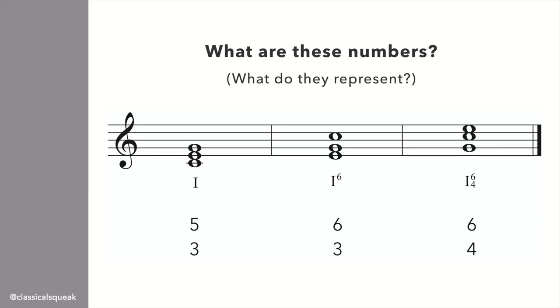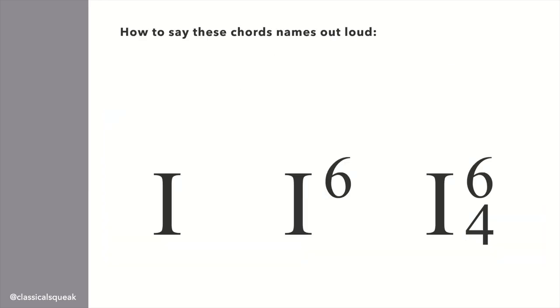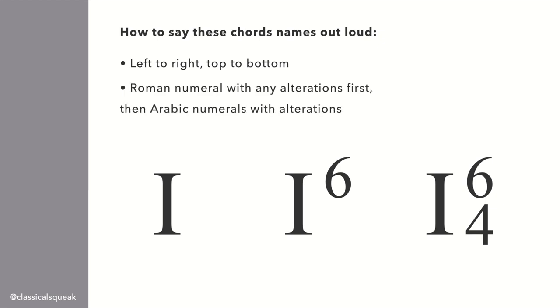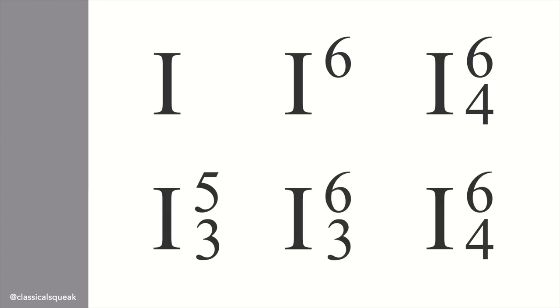Now let's take these numbers in relation to triads. The order of saying these symbols out loud is the Roman numeral first, and then top to bottom for the other numbers. Here we have 1, 1 6, and 1 6 4. However, these are actually short forms. The fully written out version would be 5 3, 6 3, and 6 4.